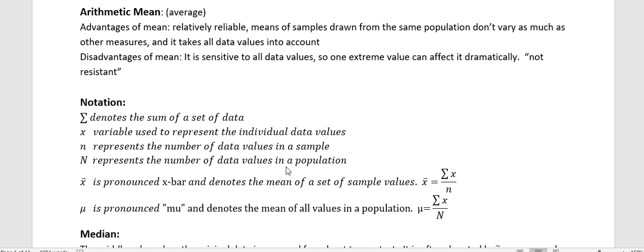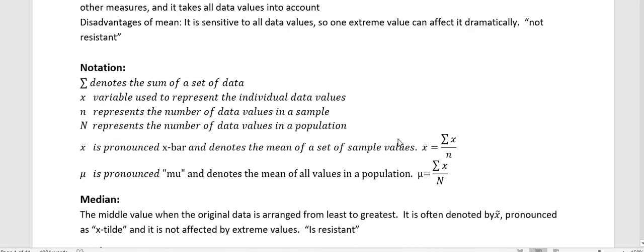Capital N represents the number of data values in a population. Now remember that we usually can't use a population, usually we're looking at a sample to describe our population. X bar is this x with the bar over it that denotes the mean of a set of sample values, and that comes from adding up all of our x values and dividing by n, the number of data values in the set.